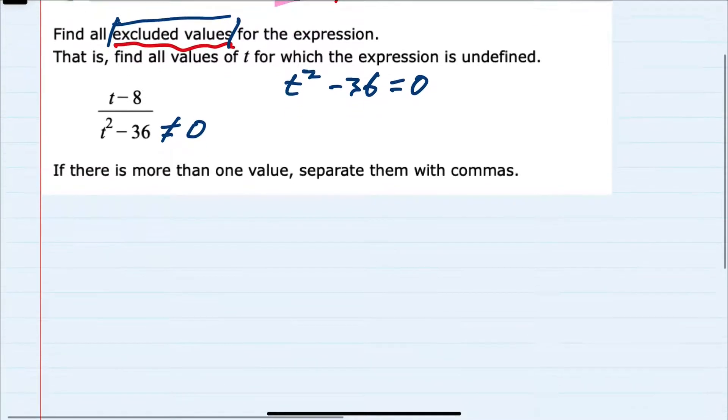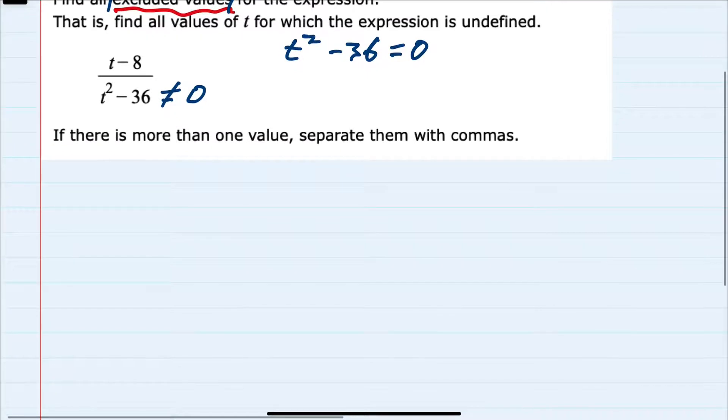And there are two ways that I could approach this t squared minus 36 equals 0. The first would be to isolate the t squared by adding the 36 over to the other side.